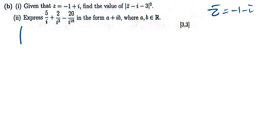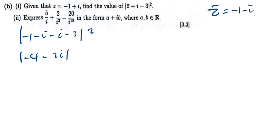So we have the square root of negative 1 minus i, then again minus i, minus 3i squared. These two give me negative 4 — negative 1 minus 3 is negative 4 — so I'll have negative 4 minus 2i squared.